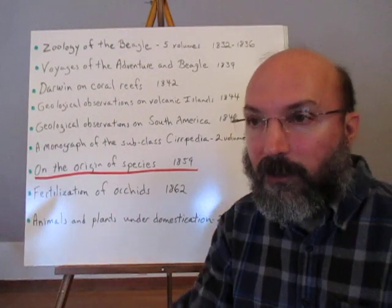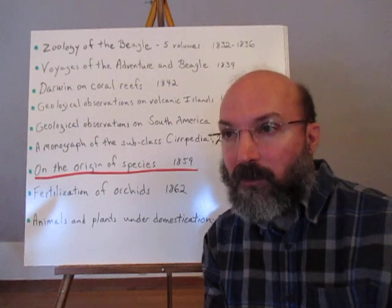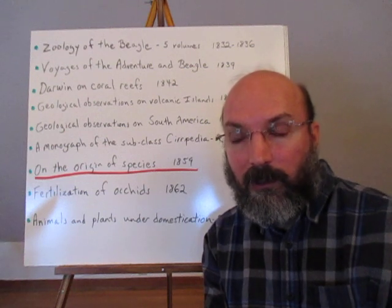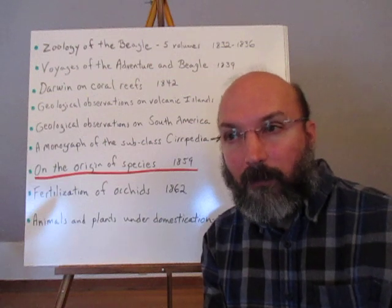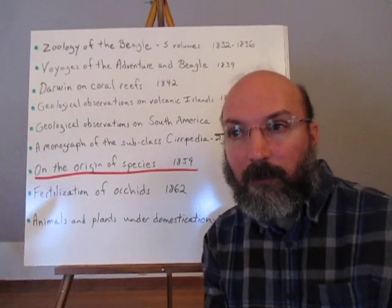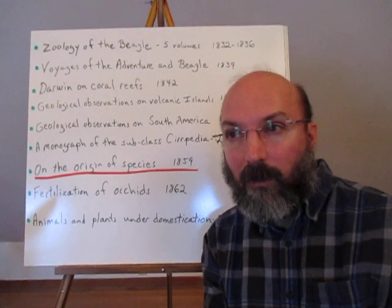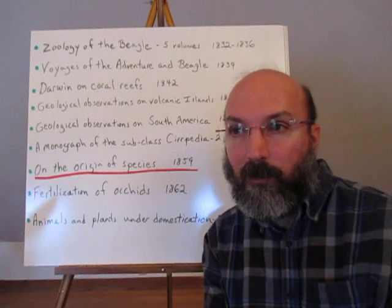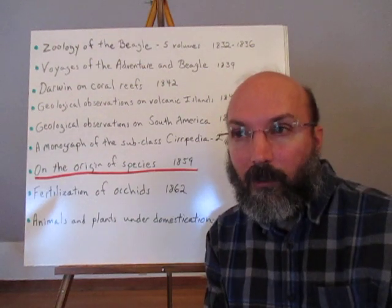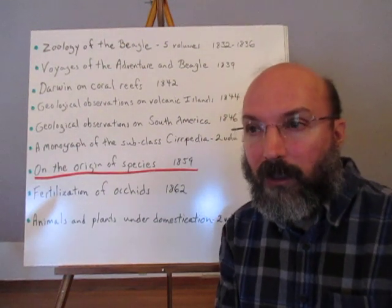It took Darwin over 20 years after returning from the Voyage of the Beagle before he was confident enough to come forward. He came forward partly because he had collected all this data, but also because Alfred Russell Wallace was coming to the same conclusion. At that point, Darwin published. At first the publication was hailed as brilliant, and while some people felt threatened by it, it was from the very beginning a bestseller.